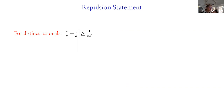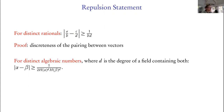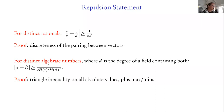Let's revisit the repulsion statements. Distinct rationals repel: if you take the difference of two fractions p₁/q₁ and p₂/q₂, the numerator is the integer a·d − b·c, which if nonzero is at least 1, so there's a minimum distance governed by the denominators. There is a generalization of this for algebraic numbers: if you have distinct algebraic numbers α and β and d is the degree of a field containing both, you get a repulsion statement in terms of the height. The proof uses the triangle inequality and absolute values, though it doesn't look quite the same flavor as the rational case.